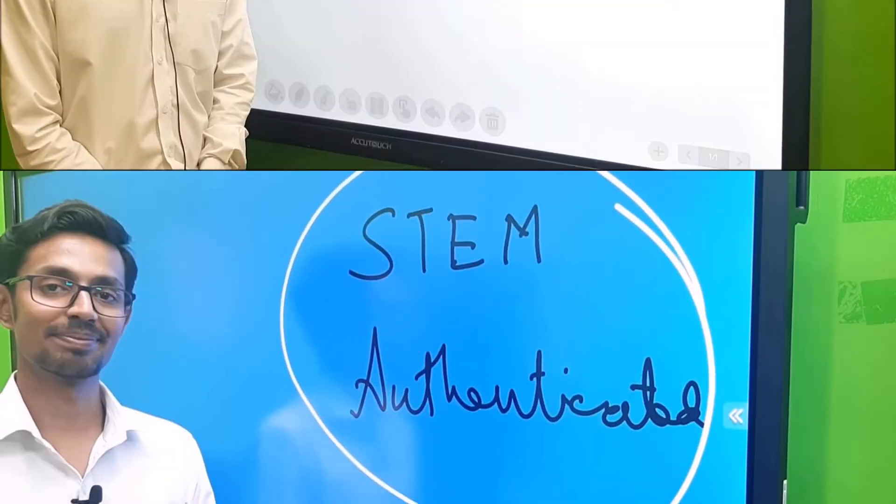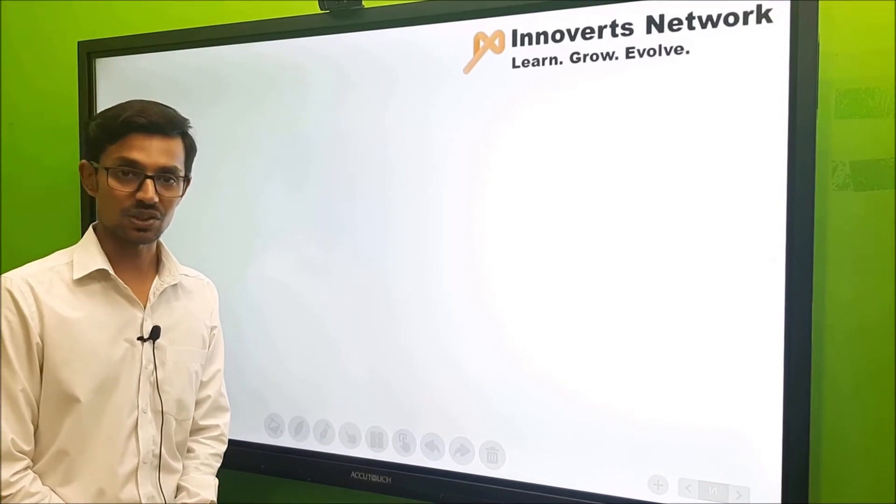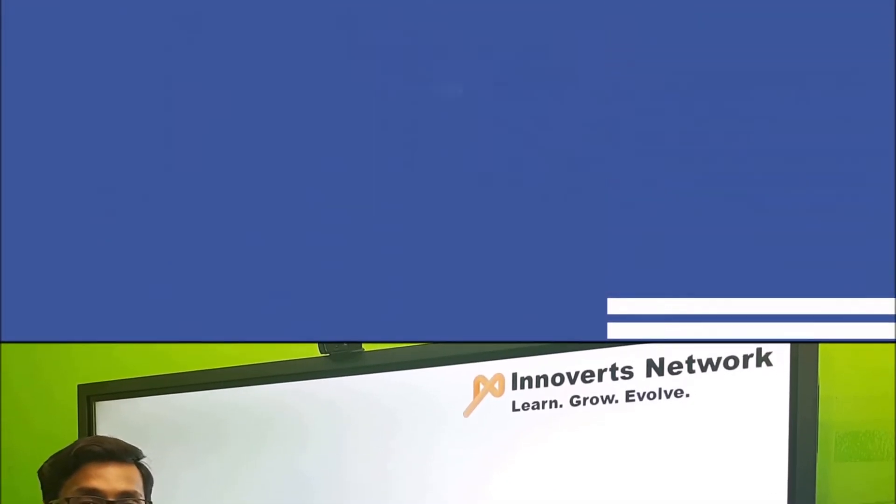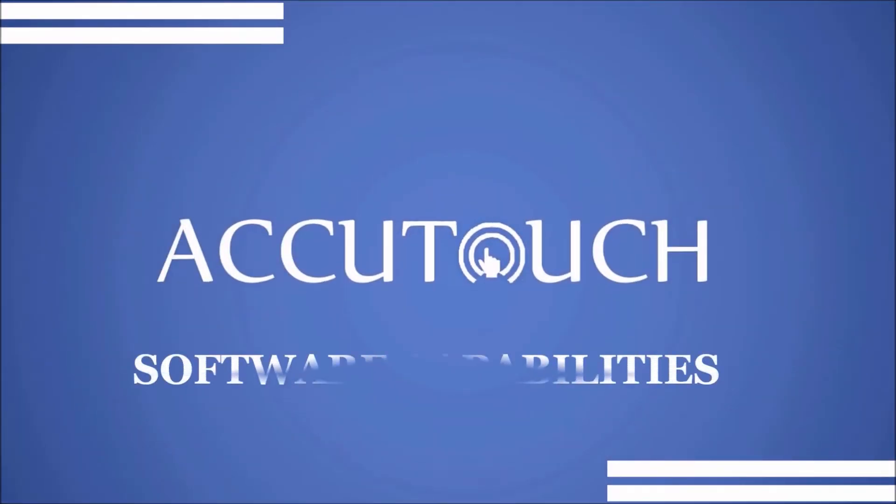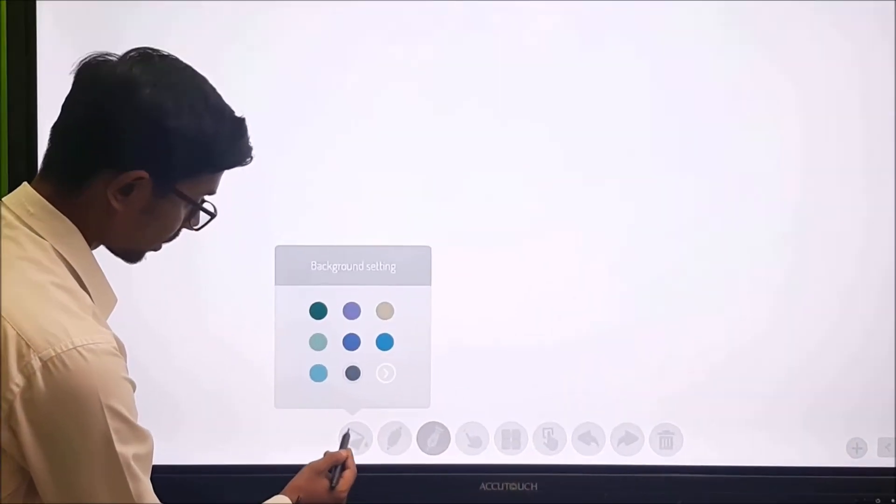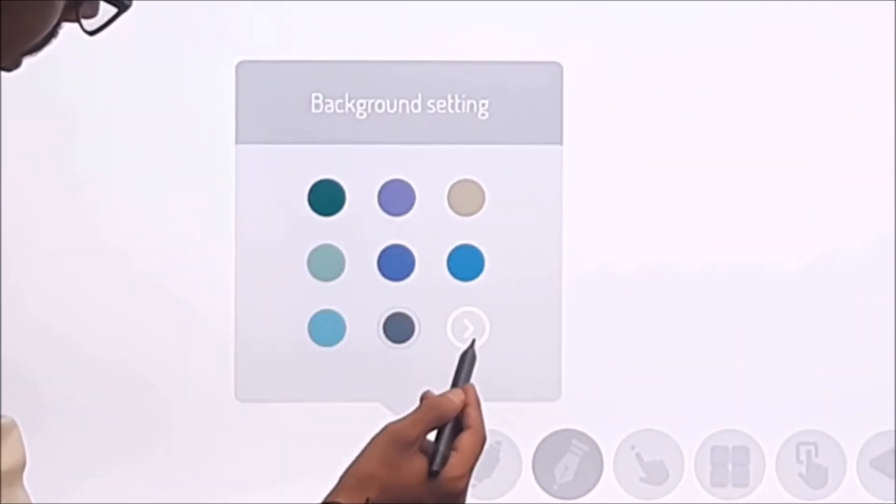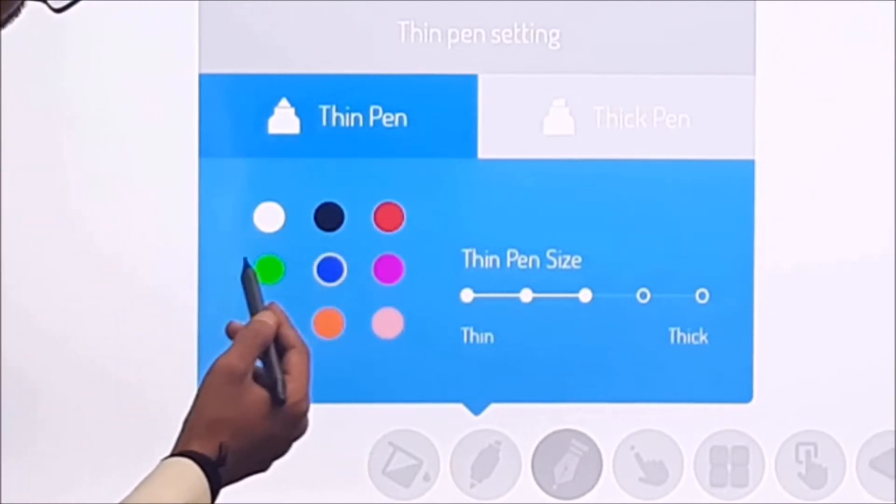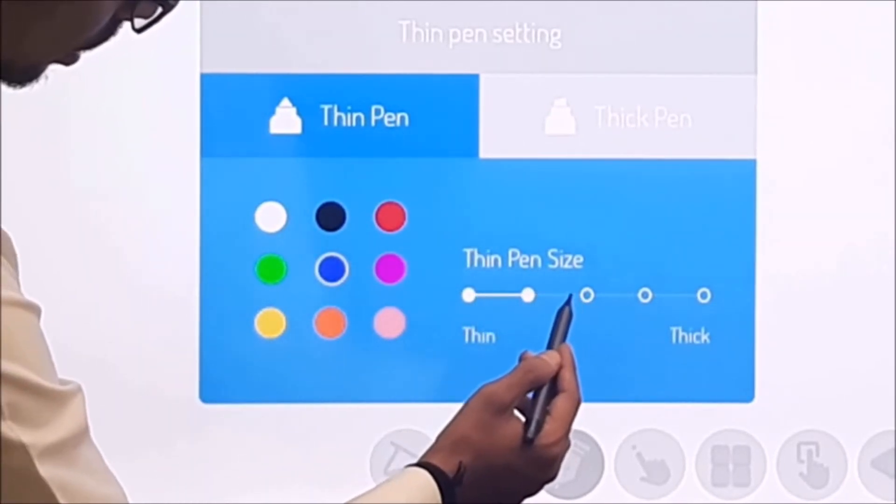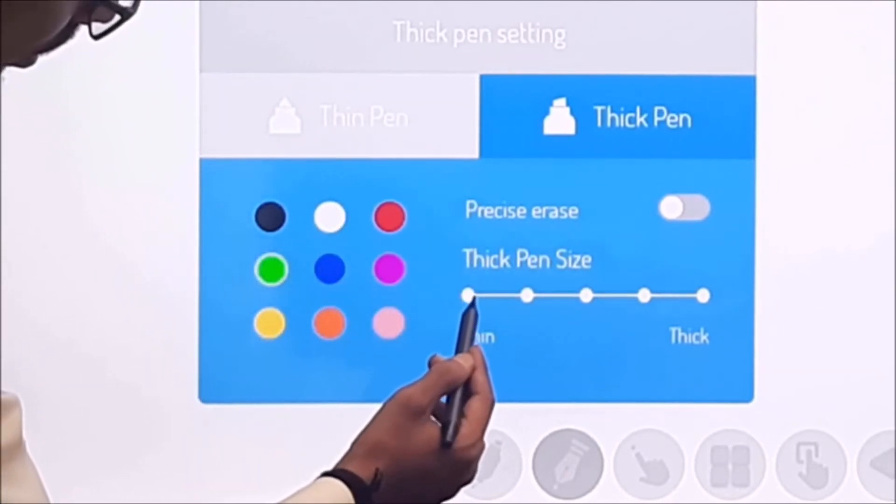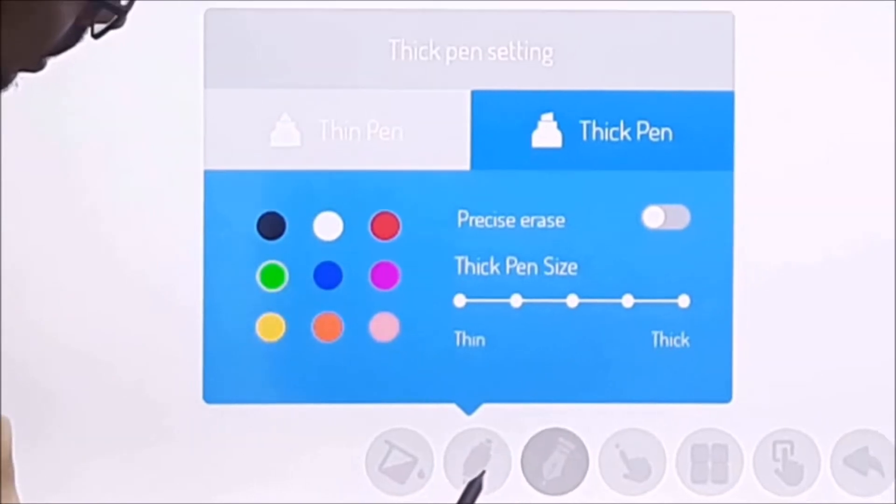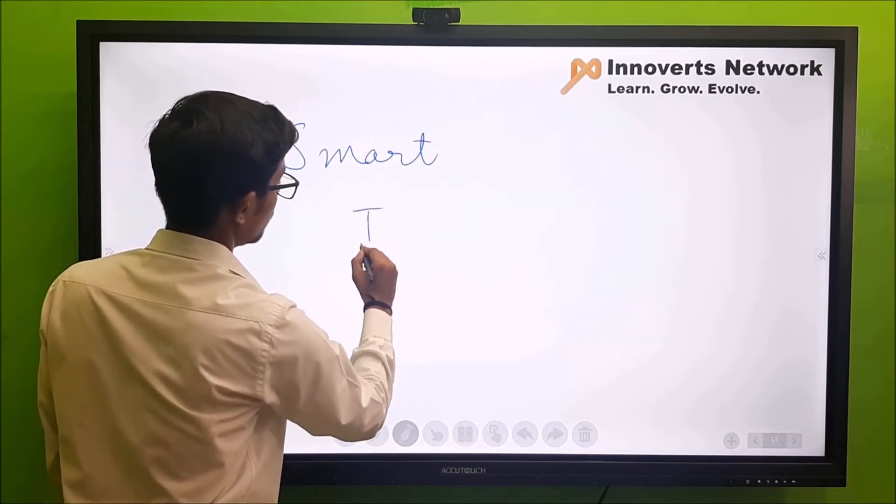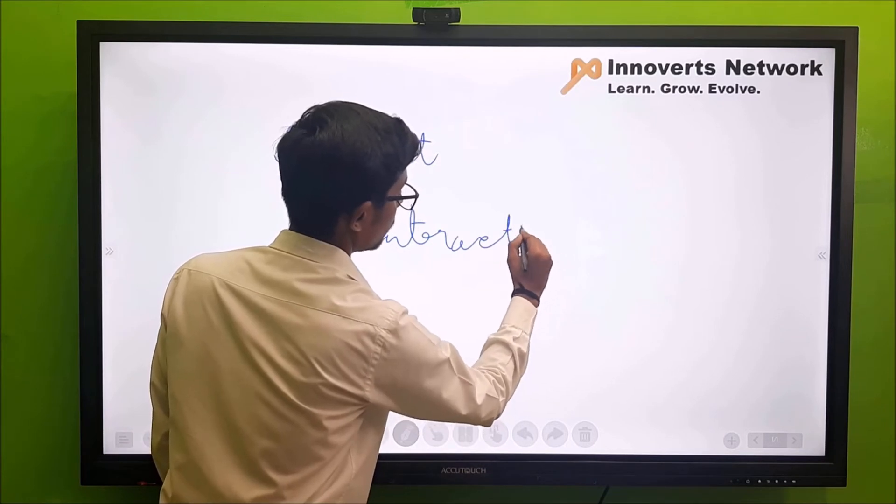Now we are going to see the whiteboarding software with Acutouch called Accutage, which is one of the world's best whiteboarding software for interactive flat panels. Let's begin. Depending upon the brightness of my room or the subject I'm about to teach, I can choose from different backgrounds. For my writing tools, I get to choose from different ink colors. For my thin pen I choose the color blue and the thickness size accordingly, and for my thick pen I choose the color green. Now I demonstrate by writing something. Once I start writing, you can see how smoothly the board detects my ink, and that is the superglide writing surface.